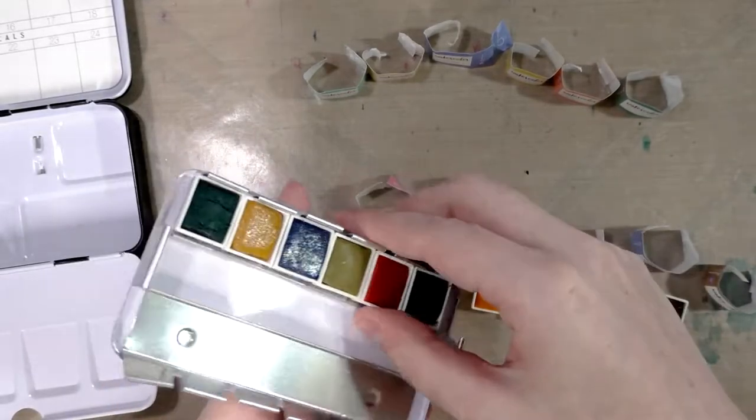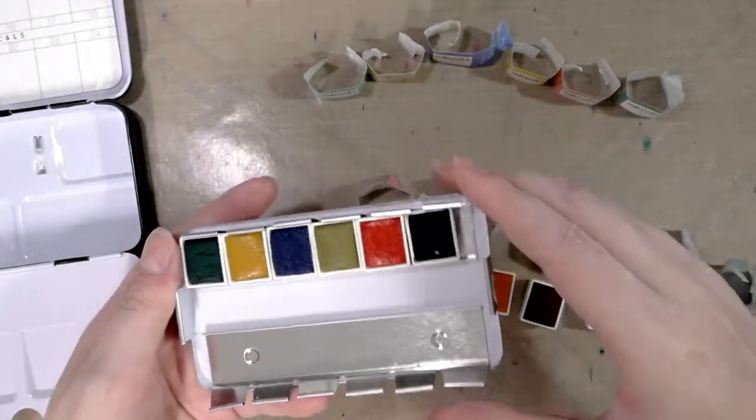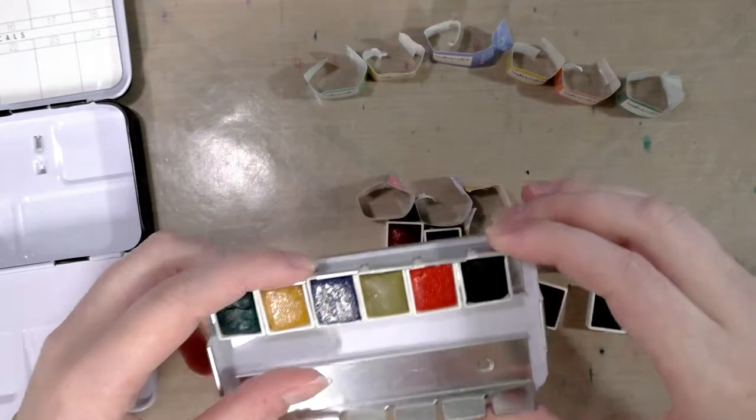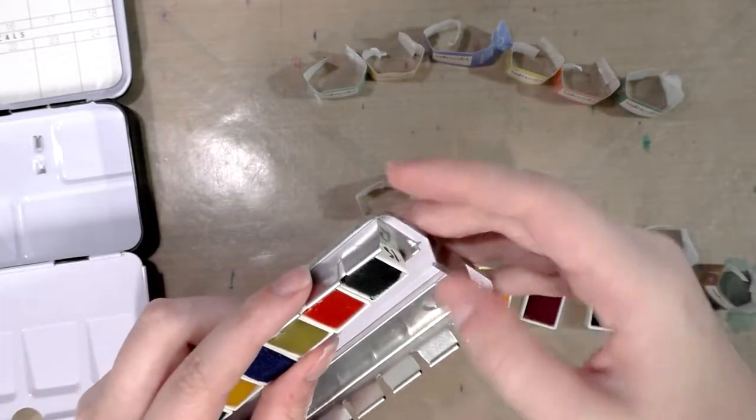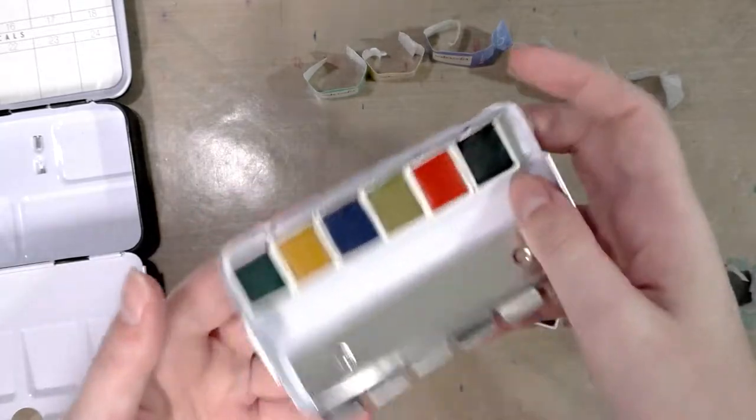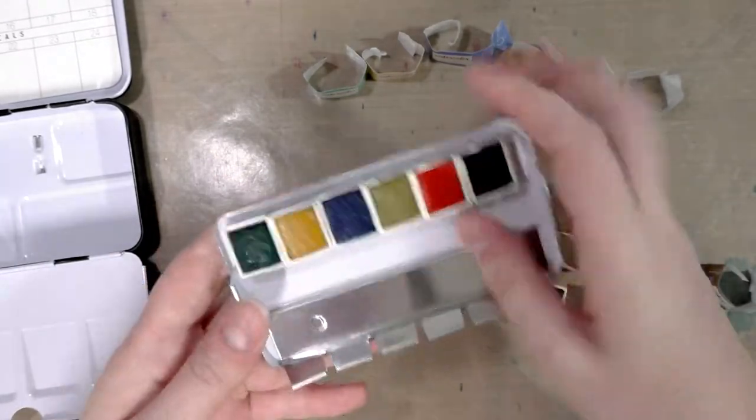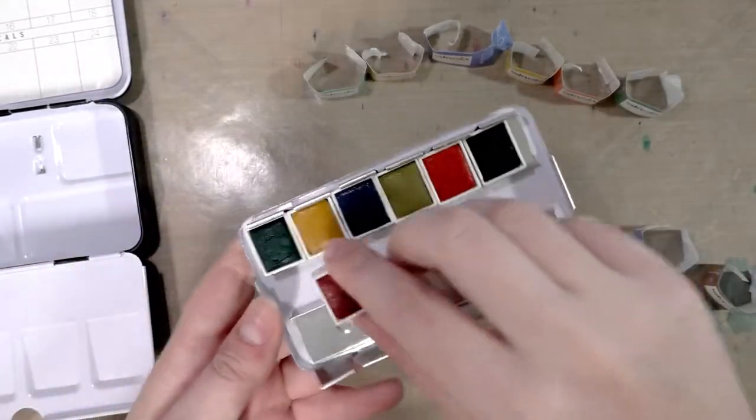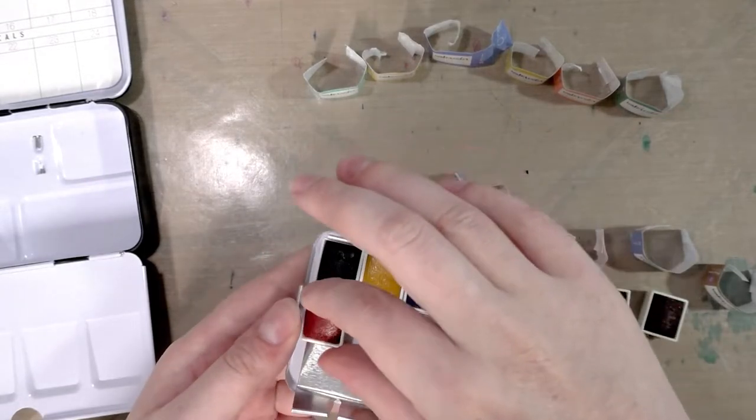Once you have a row filled, you can just go ahead and push your little metal stopper in place. The combination of the tape and the metal stopper should be enough to keep these paints from going anywhere.